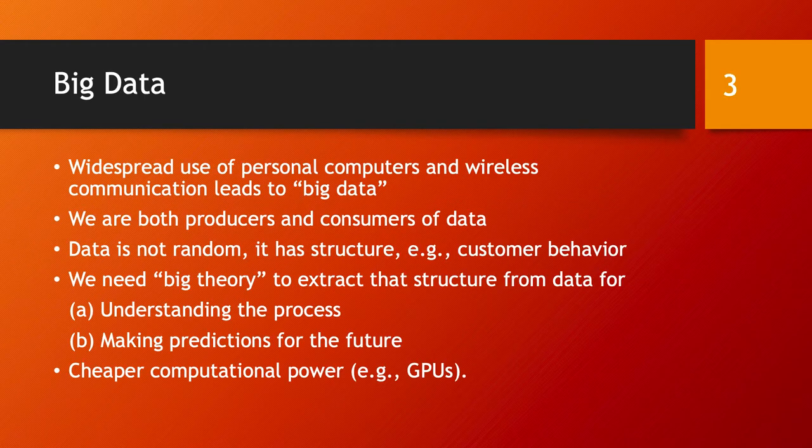So here are some examples in which we need a different type of computation. In this kind of world that we live today where we are surrounded by data, and this data can come from the widespread use of computational devices, computers and phones and wearable devices and wireless communication that really collects data about everything we do, where we do it, when we do it, next to whom we are. And in this kind of world, we are both producers and consumers of data.